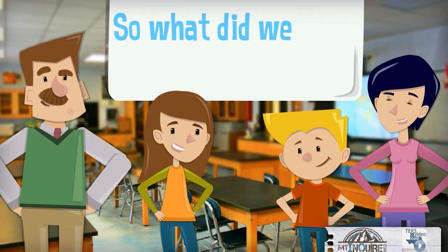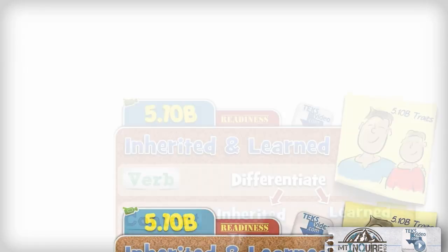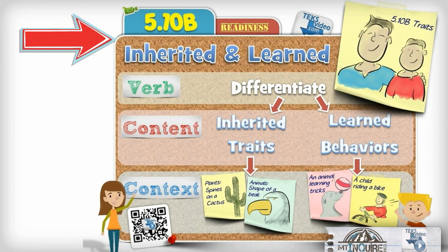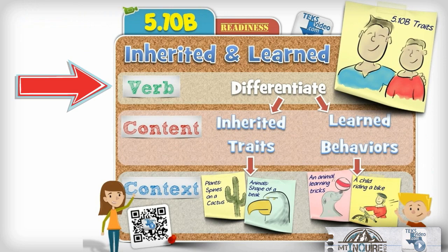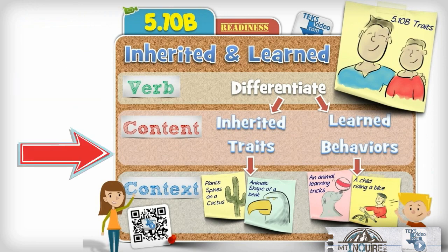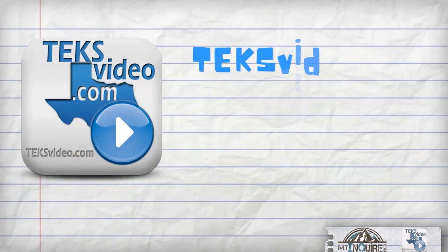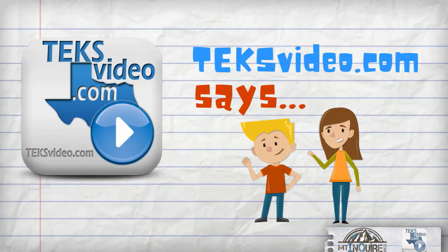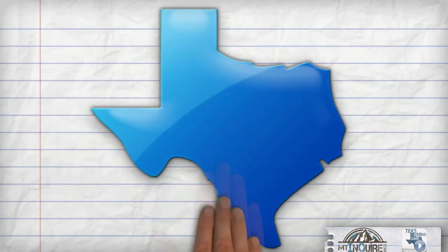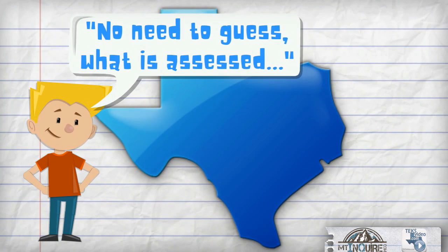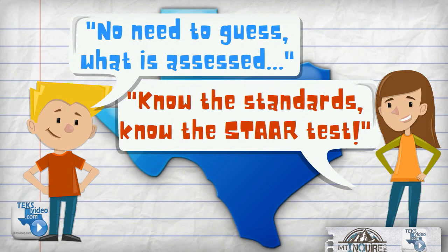So, what did we learn today? We learned in 5.10B about the difference between inherited traits and learned behaviors of organisms. No need to guess what is assessed — know the standards, know the STAAR test.